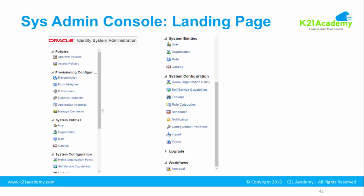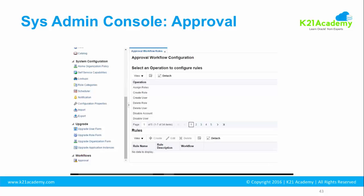The system configuration section covers things like system properties, scheduled jobs, notifications, and import/export. We'll cover import/export in a separate module. The scheduler was briefly introduced when discussing LDAP sync — there are scheduled jobs that sync data from the LDAP server (OID or OUD) to Oracle Identity Manager. We'll look at commonly used scheduled jobs in detail. You can also define approval-based workflows or approval workflow rules here, and we'll also look at workflows from SOA.